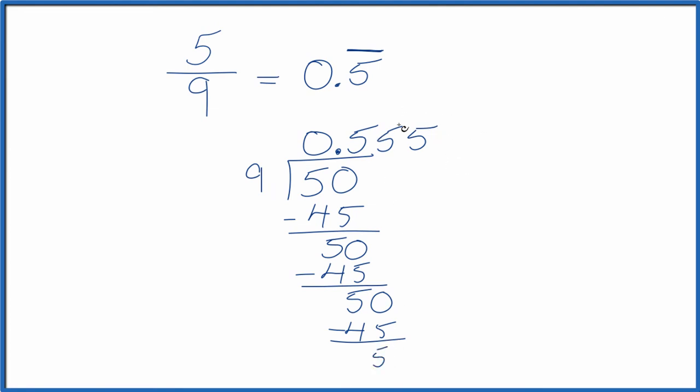So in answer to our question, when we divide 5 by 9, we get 0.555. That means the fraction 5 ninths equals the decimal 0.5 with the 5 repeating.